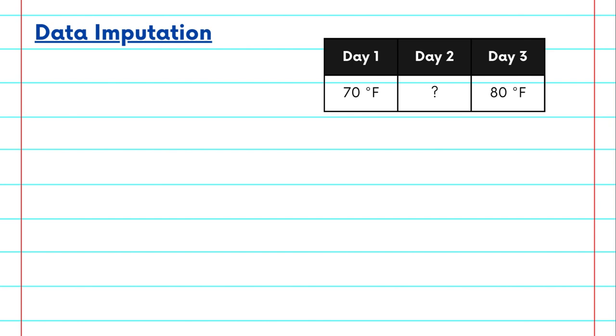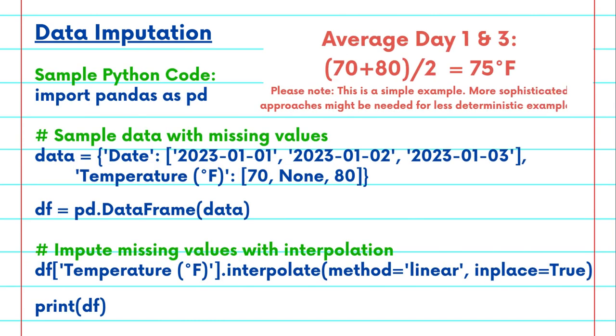Data imputation. Missing data is a common issue in time series data sets. Let's say you're dealing with daily temperature data and some days you have missing values. To address this, you can use data imputation techniques. One way to impute the missing temperature on day two is by interpolating it between the temperatures of day one and day three. The interpolated temperature of day two would be the mean of temperature day one and day three, 70 and 80 degrees Fahrenheit, divided by two, giving us 75 degrees Fahrenheit.